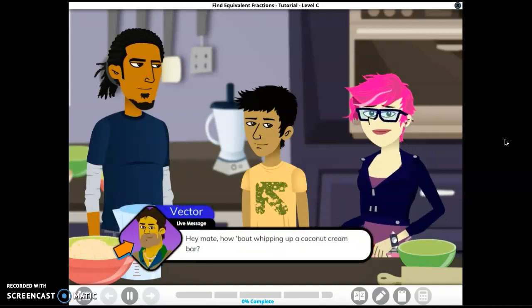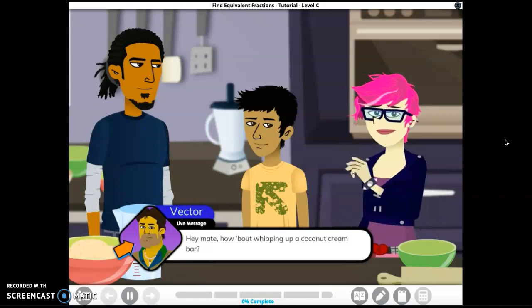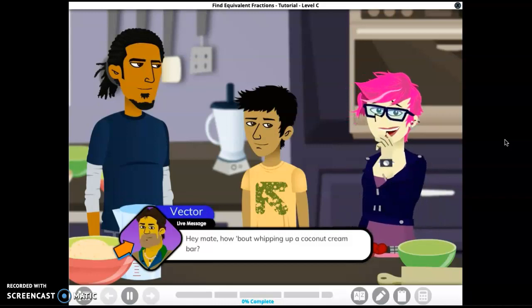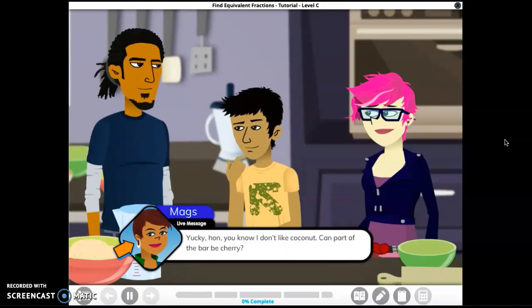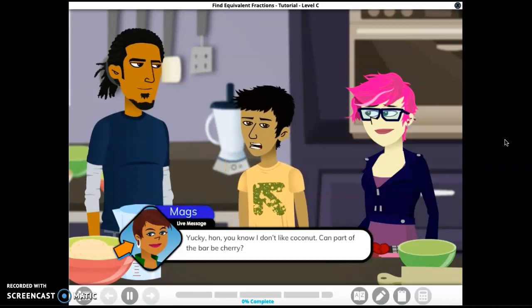Oh look, our first message. Factor writes in, hey mate, how about whipping up a coconut cream bar? See, this will be simple. One coconut cream bar coming right... whoa, hold up boss. Mags just sent another message. She writes, yucky hun, you know I don't like coconut. Can part of the bar be cherry?